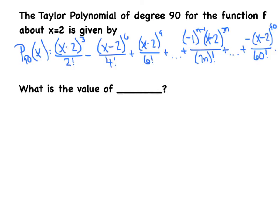This next example is considerably harder — significantly more challenging — but right on target with what we expect on the AP exam. We've got a Taylor polynomial of degree 90, a little obnoxious but we'll work with it. They showed us the first three terms, dot dot dot, gave us the general term, and then showed the very last term — the 90th degree term. That general term is really important because it lets you build any term between the first and the 90th that they happen to ask for.